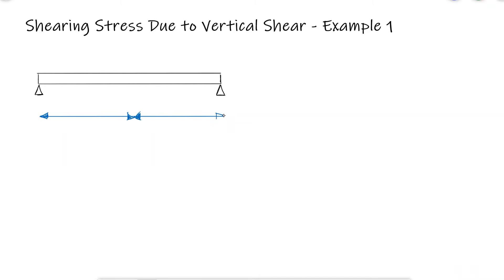For a simply supported beam subjected to a point load in the middle that has a cross-section with the given dimensions, what would the maximum shearing stress be and where would it be located?